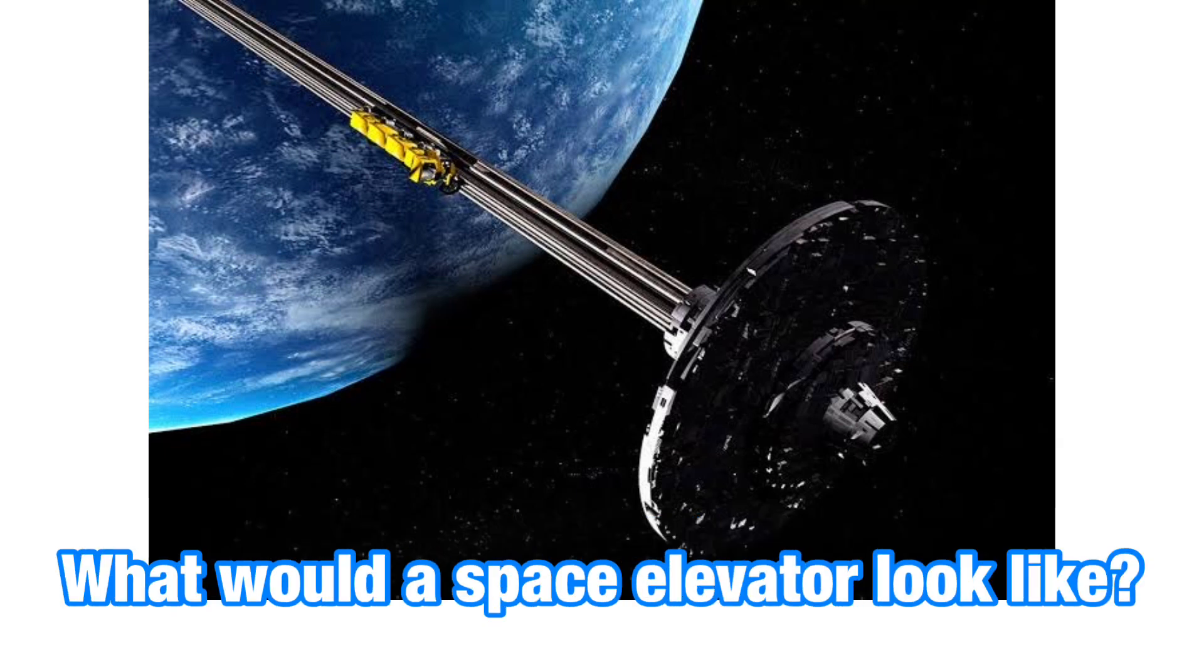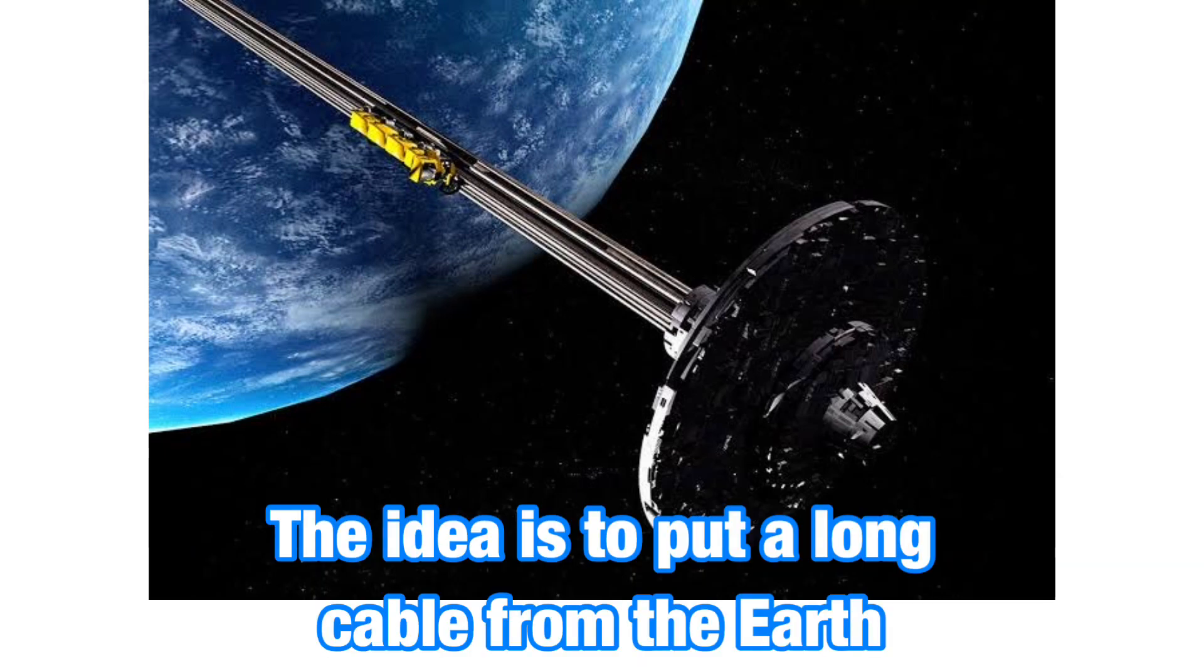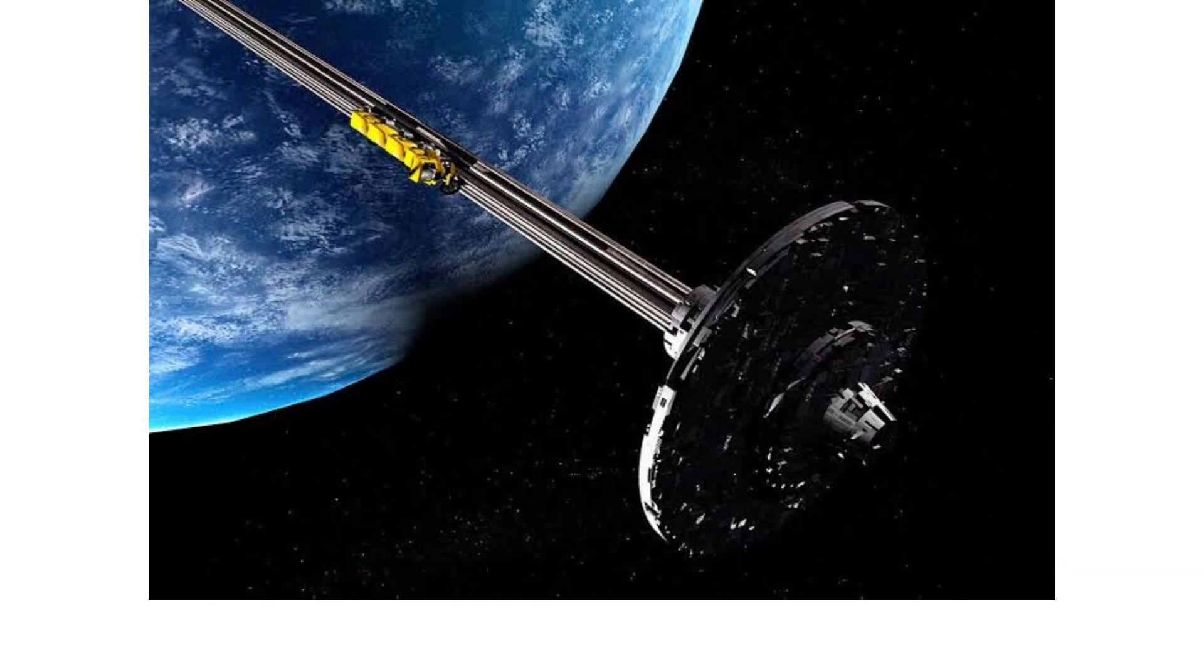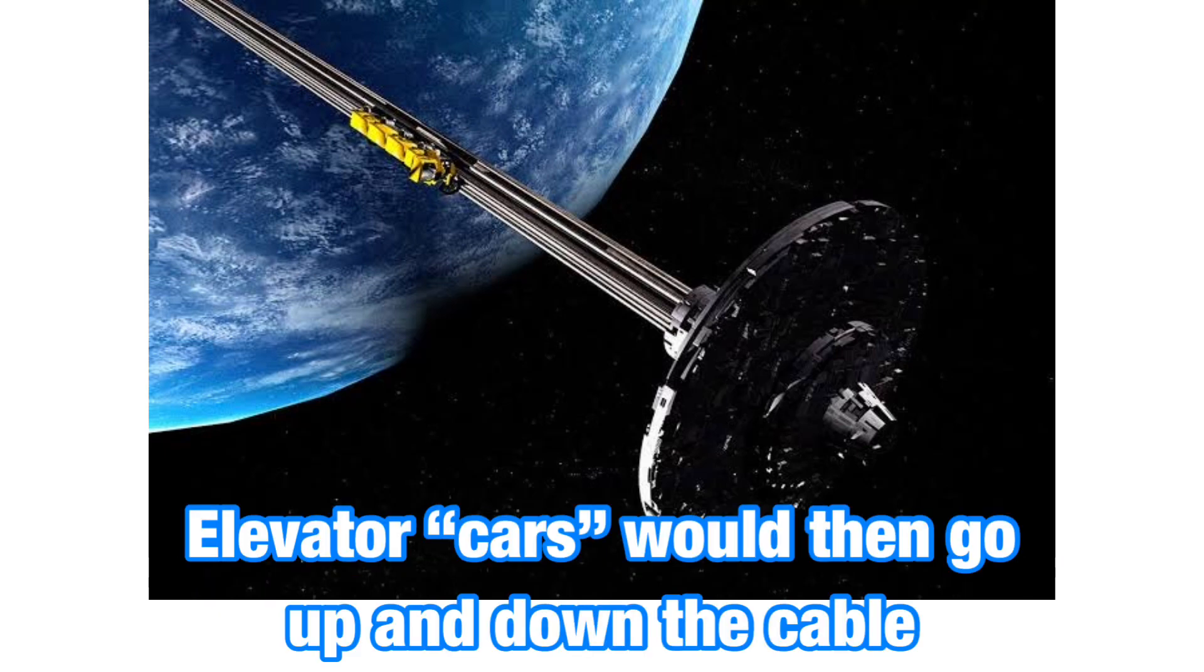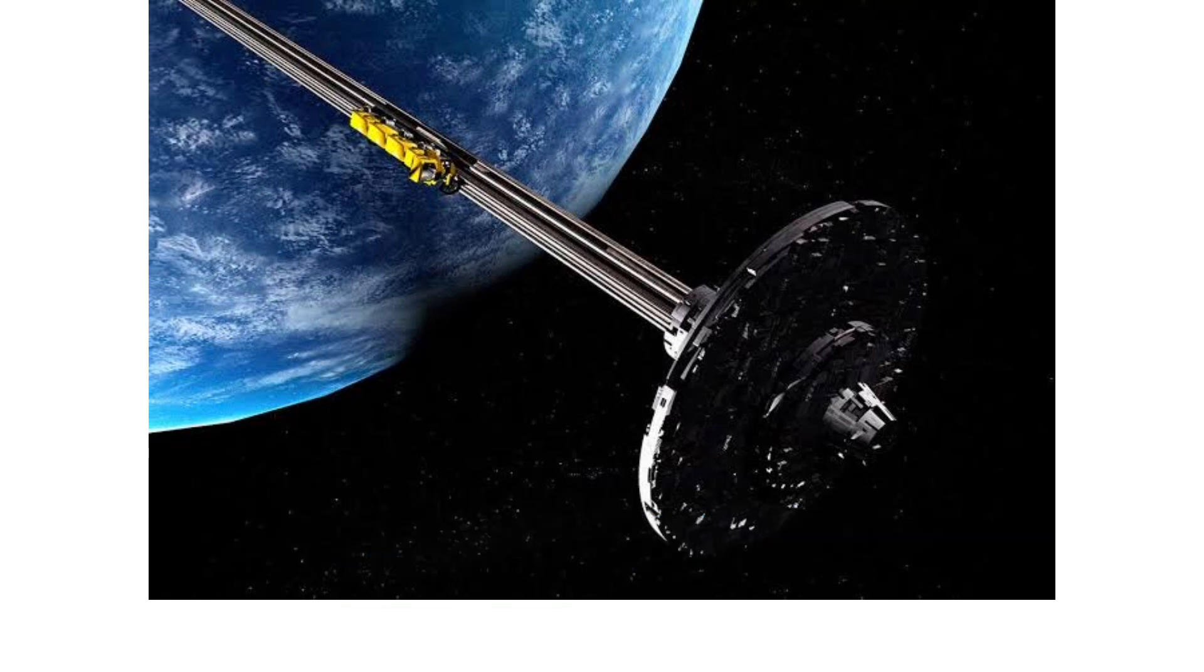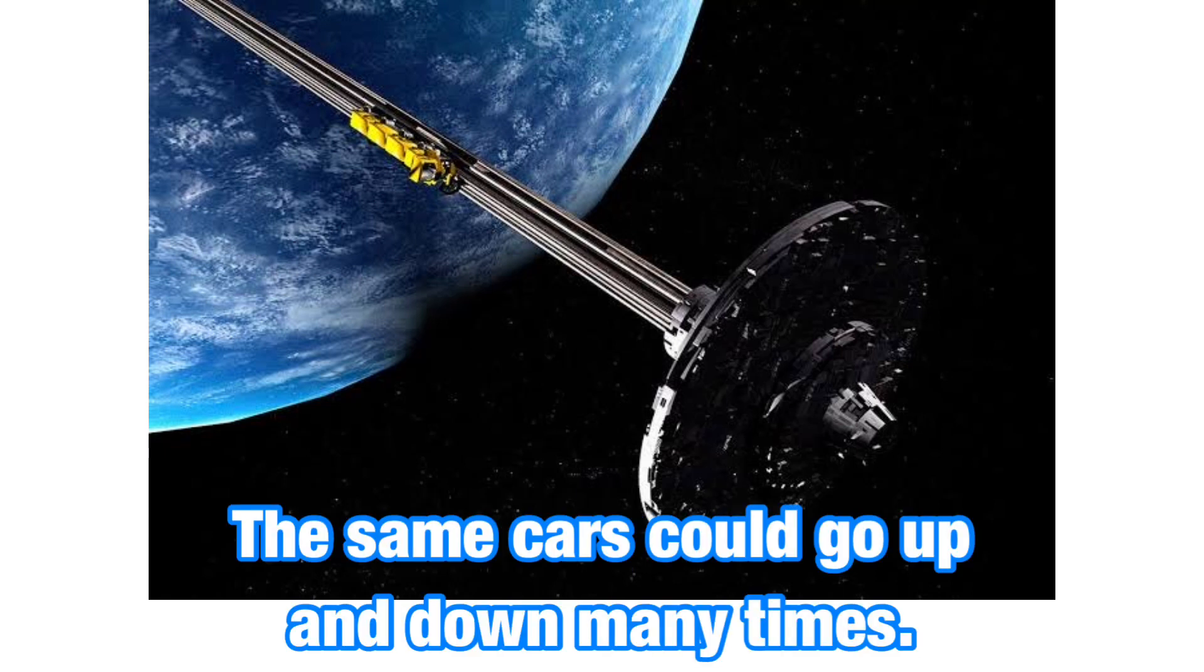What would a space elevator look like? The idea is to put a long cable from the Earth up to something far away in space. Elevator cars would then go up and down the cable to a kind of space station near the other end. The same cars could go up and down many times.